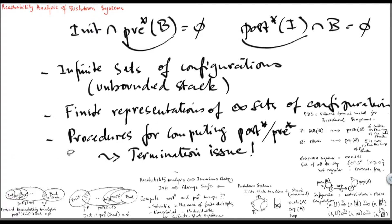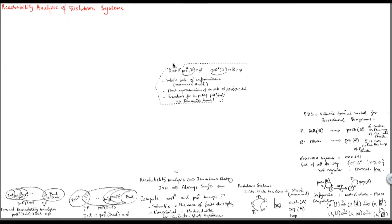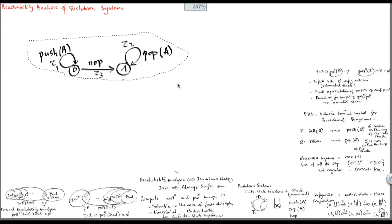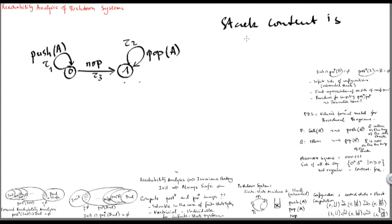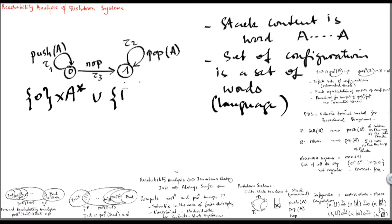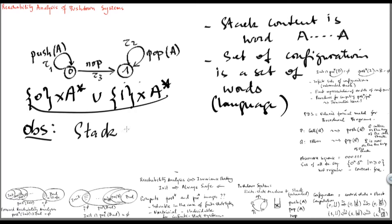Let's address the issue of representing, in a finite manner, infinite sets of configurations of pushdown systems. Consider again our example: the stack content is a sequence of A's, so it's a word of the form A, A, A, etc. The set of configurations is therefore a set of words — a language. For instance, here it will be {0} × A* union {1} × A*. The key observation is that although the set of observable computations is a context-free language, the set of stack contents is actually a simple regular language.